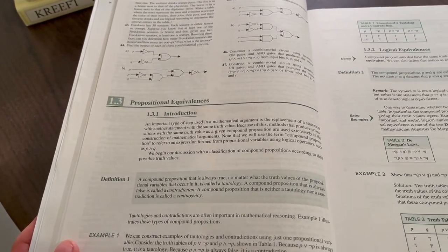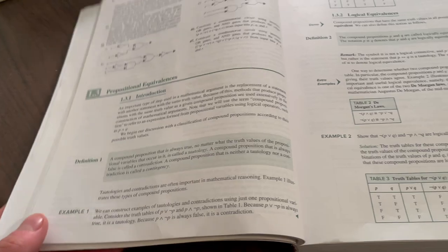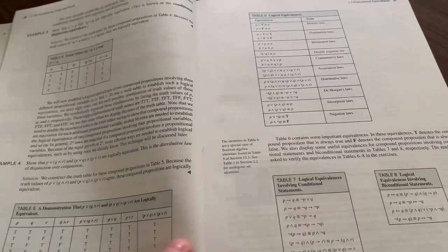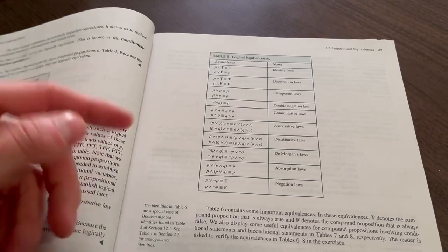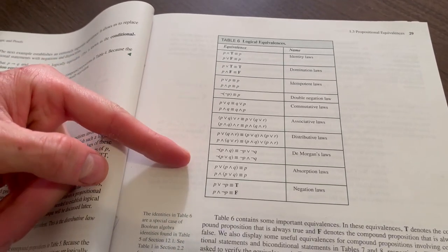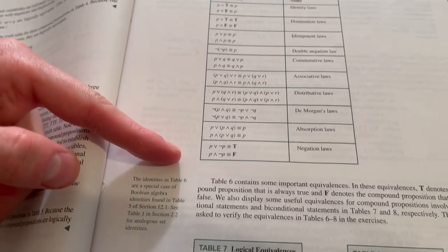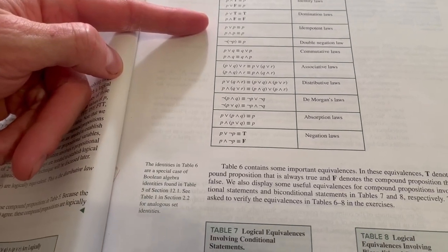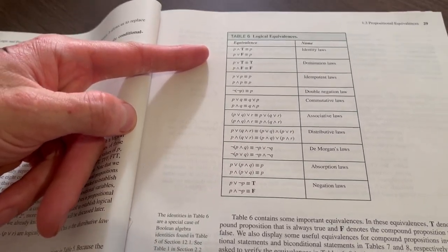And then we can get into propositional equivalencies with section 1.3. We can think about De Morgan's laws. We have all sorts of logical equivalencies. So recently, on this YouTube channel, we've talked, for example, about the absorption laws, the negation laws. We've talked about the domination laws, identity laws, and so forth.